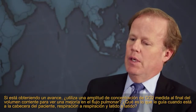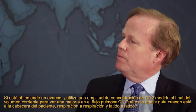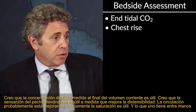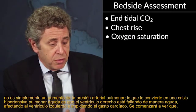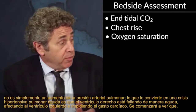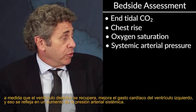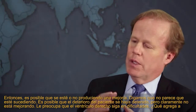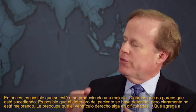Are you using end-tidal CO2 amplitude to see improvement in pulmonary flow? End-tidal CO2 is helpful; the feel of the chest rising is helpful; as compliance improves, circulation is probably improving. Saturation is obviously helpful. What makes it a pulmonary hypertensive crisis is not just elevated pulmonary arterial pressure, but the RV acutely failing and impinging upon the LV, impeding output. As the RV gets better, LV output improves — reflected in an increase in systemic arterial pressure. If you're not making progress and the RV is still under stress — what do you add next?